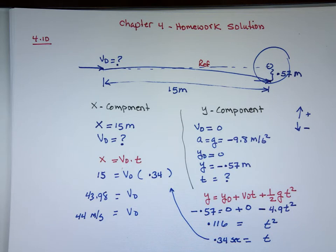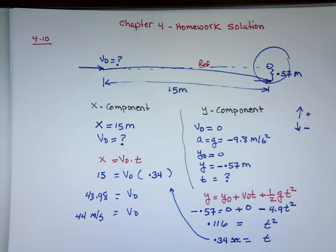Any questions? One student got 0.013 by taking the square root of 0.116 incorrectly. You need to use the square root function (the 'hook'), not the square. Make sure you hit the second key, then x² to get the square root on your calculator.